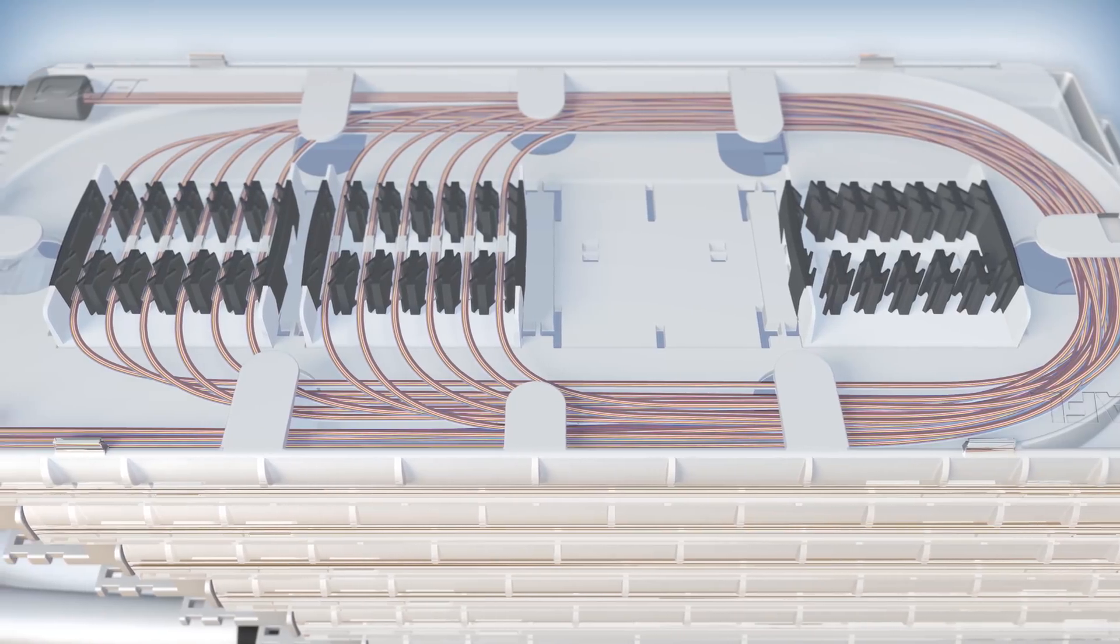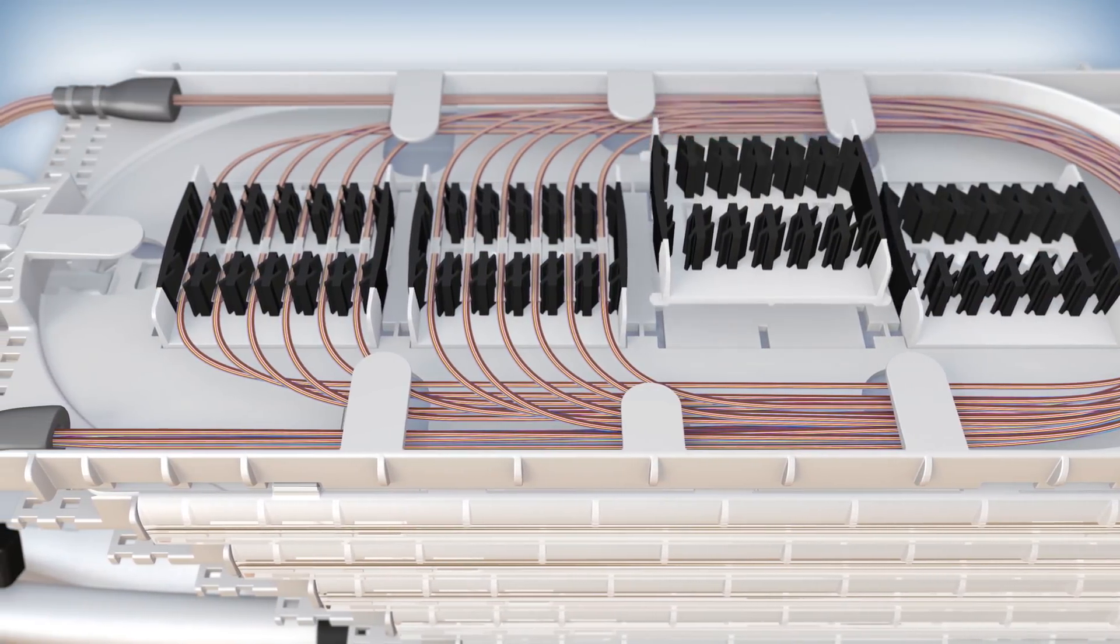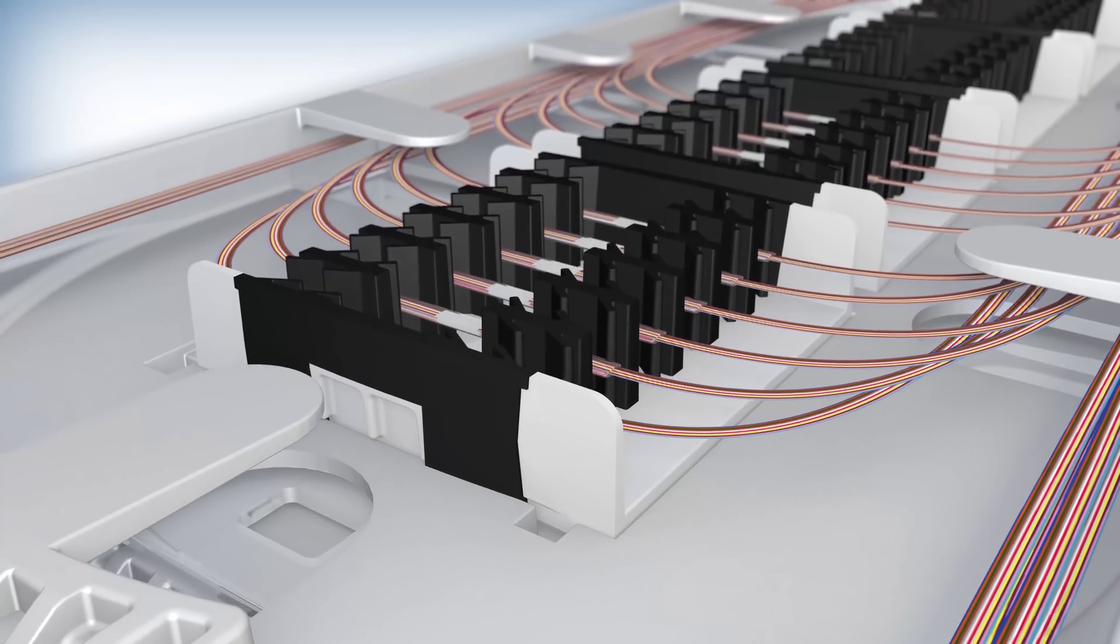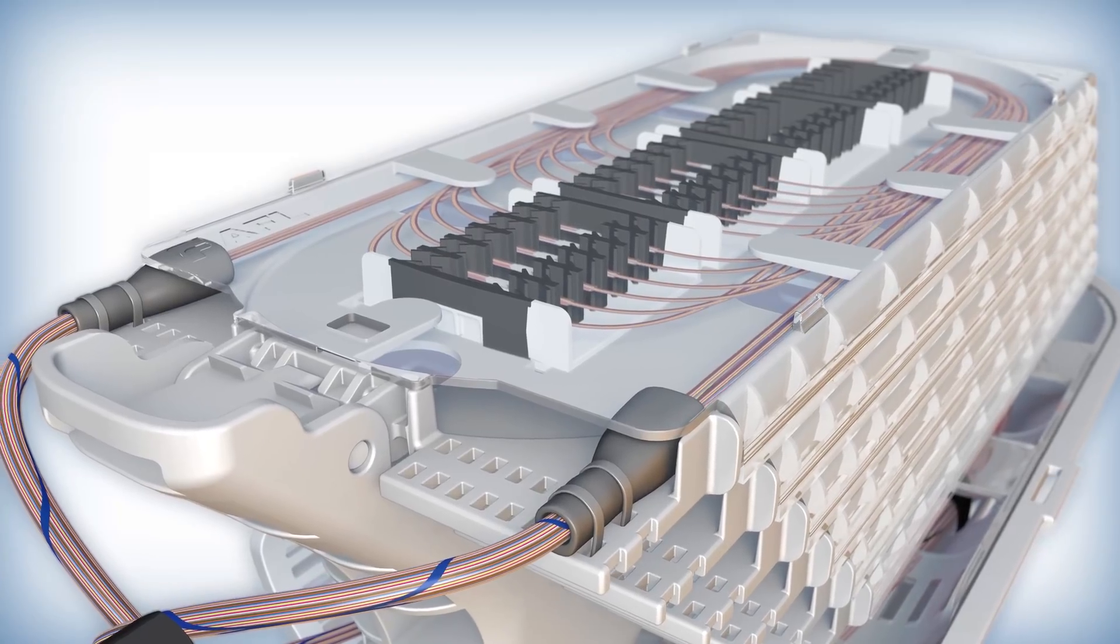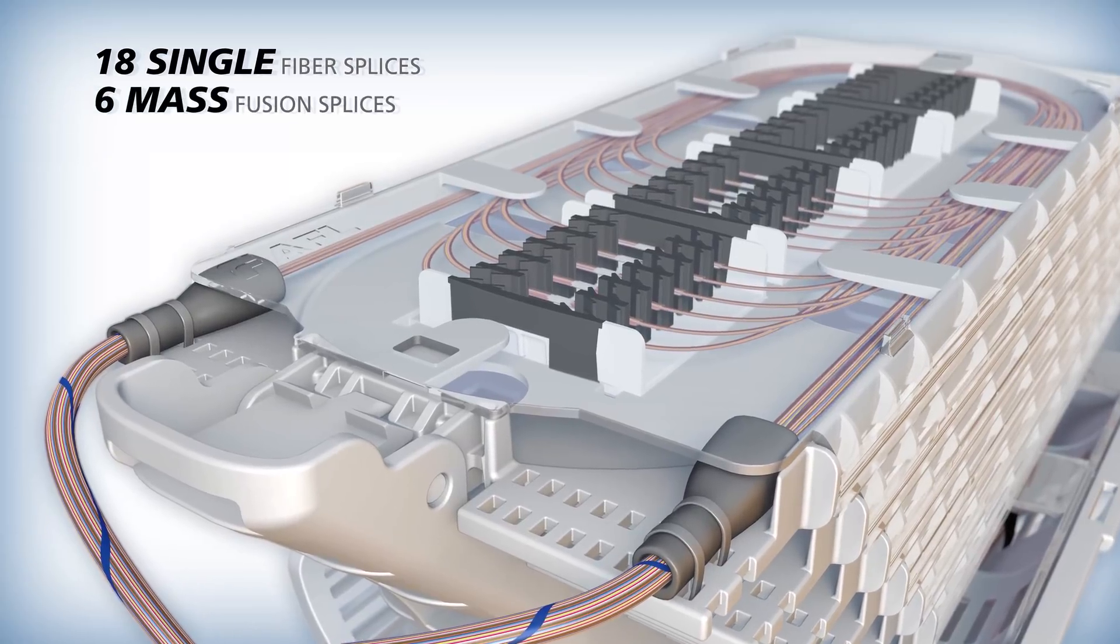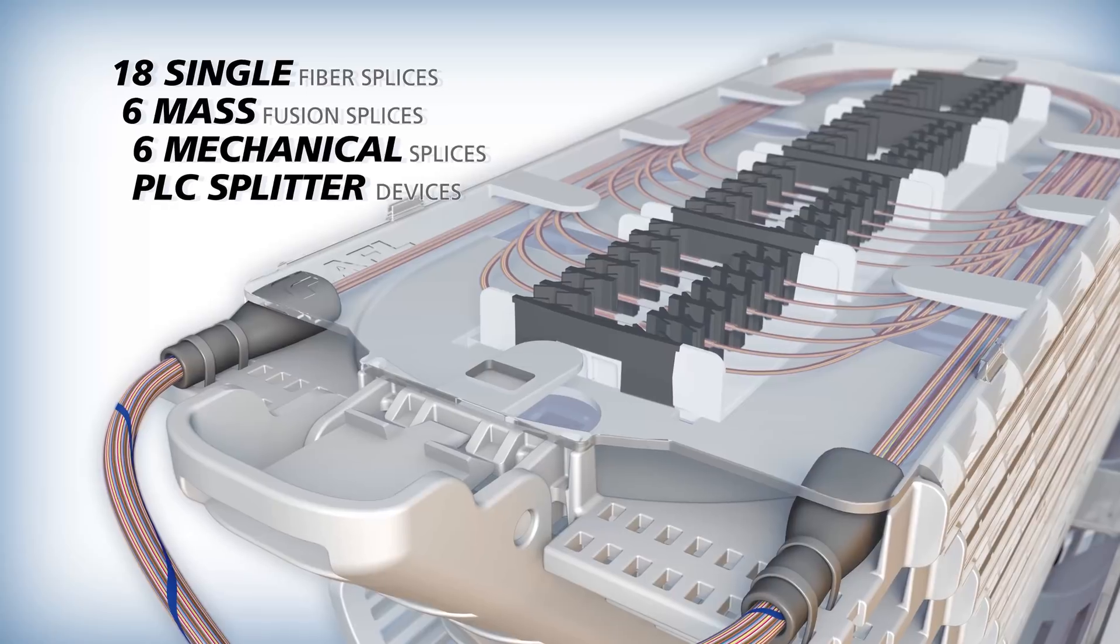The Apex splice trays include clear polycarbonate covers and splice modules that slide, snap and lock into the trays. Each splice module has six slots surrounded by overmolded rubber. The universal module design holds 18 single fusion splices, six mass splices, six mechanical splices or PLC splitter devices.